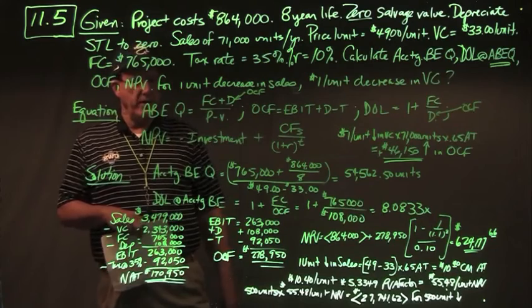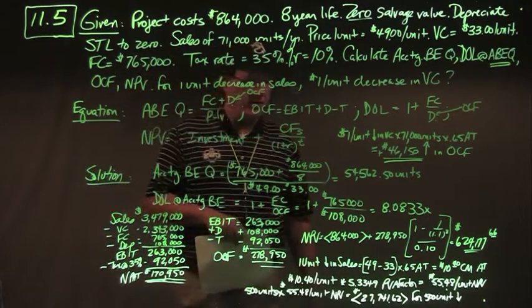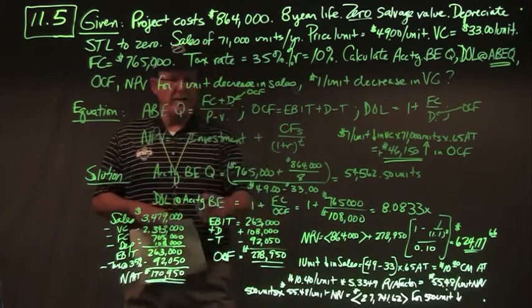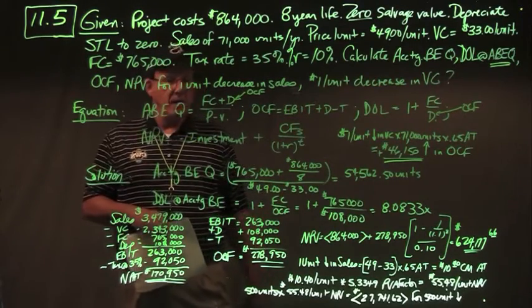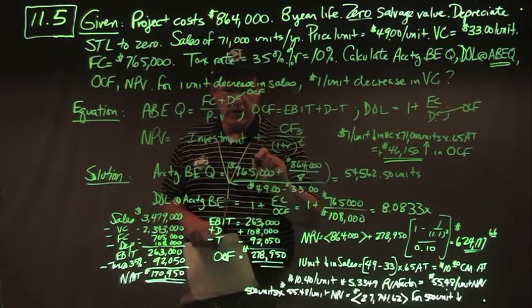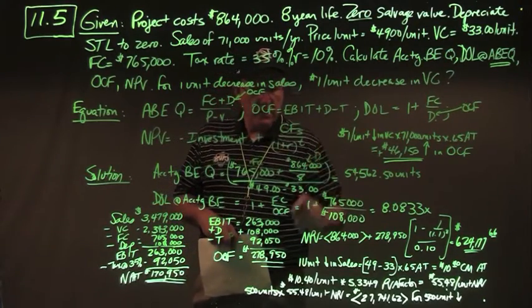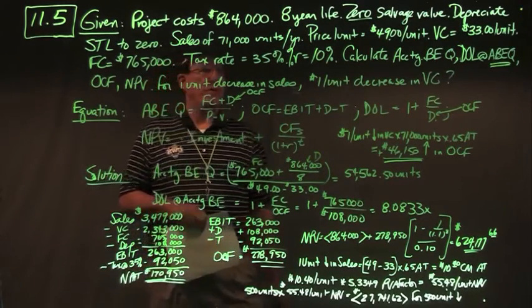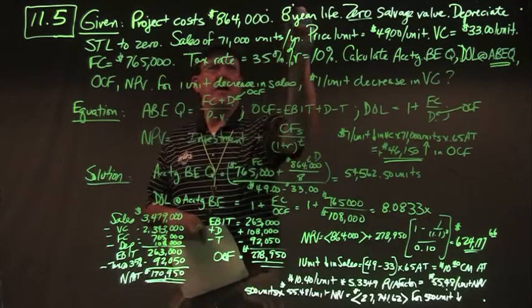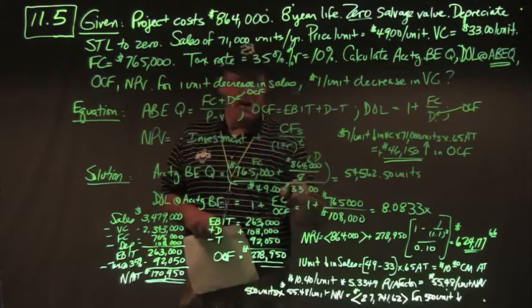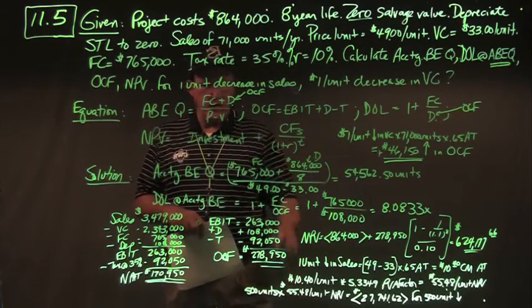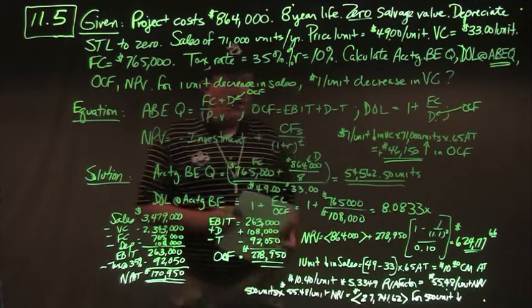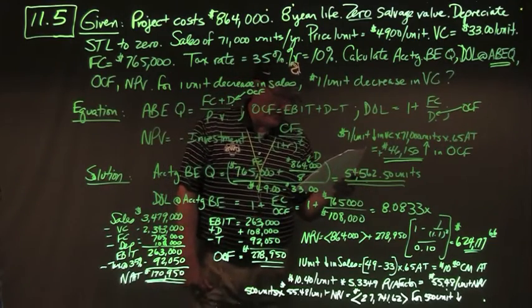NPV is the negative cash outflow plus discounted cash inflows at 10%. Accounting break-even quantity: fixed cost $765,000 plus depreciation ($864,000 divided by 8 years = $108,000) divided by contribution margin (P minus V: $49 minus $33 = $16). This gives accounting break-even of 54,562.5 units — approximately 54,563 units.